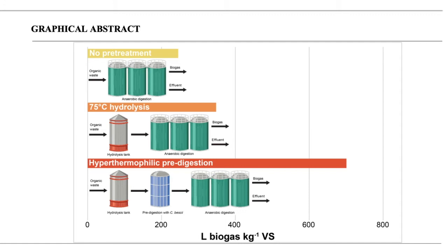Various wastes pre-digested with C. Bescii produce double the amount of methane gas as controls.